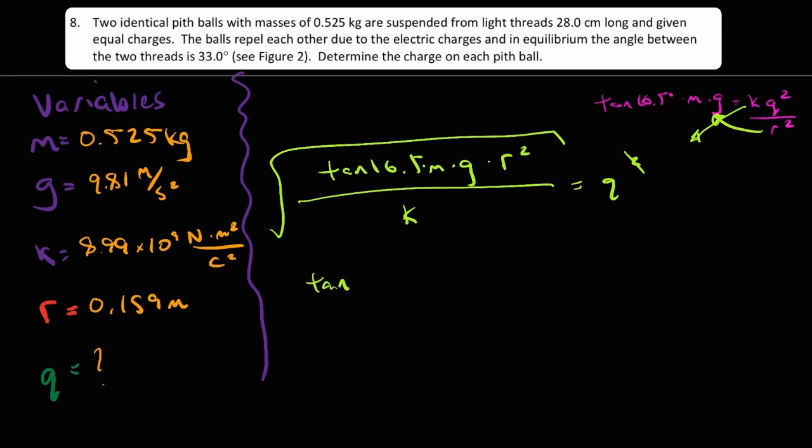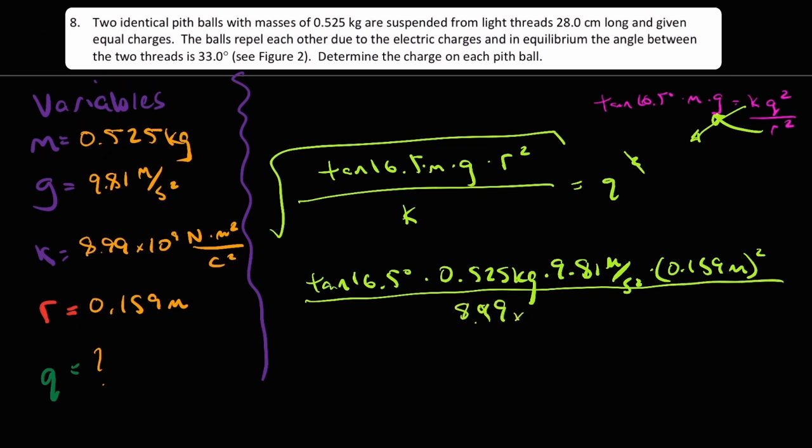Tan 16.5 times 0.525 kilograms times 9.81 meters per second squared times 0.159 meters squared, all divided by 8.99 times 10 to the power of 9 newton meters squared over coulomb squared, all of which we will square root, and if you put this in a calculator, you'll get the correct answer with three significant figures of 2.07 microcoulombs.